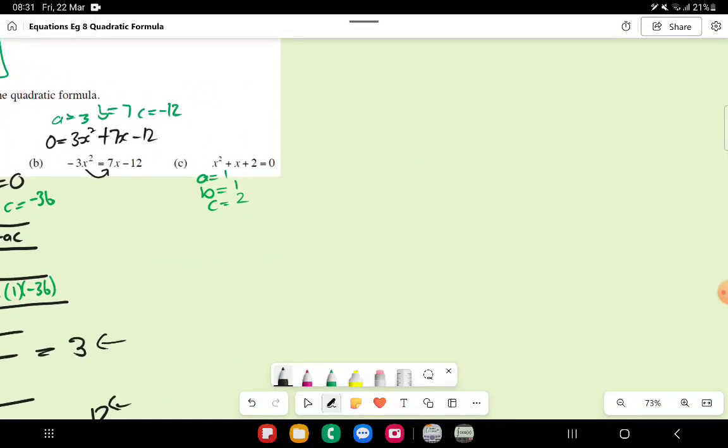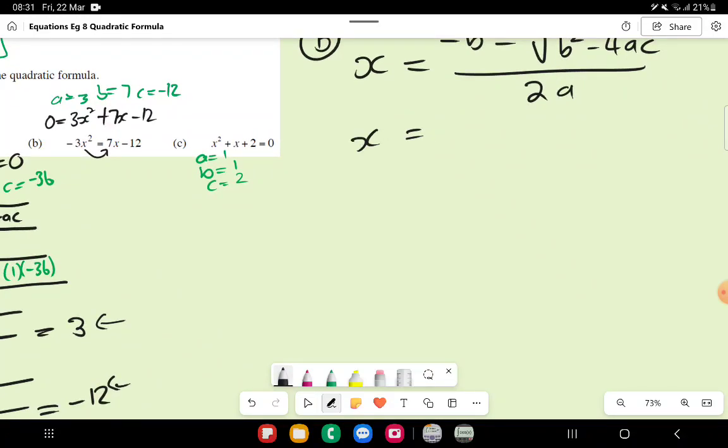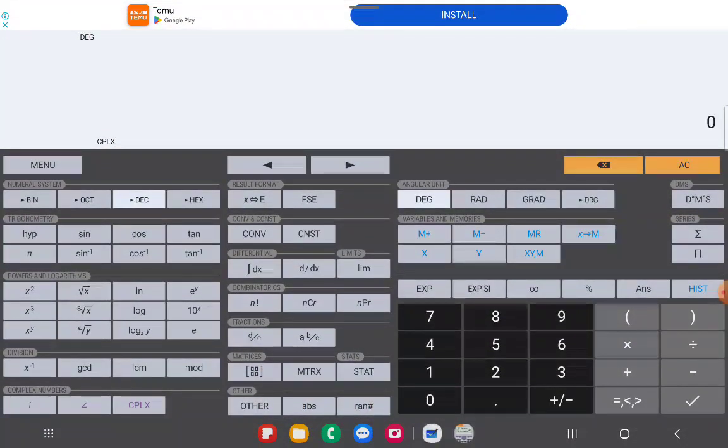Let's do b. So for question b, we know that x is equal to negative b plus minus the square root of b squared minus 4ac divided by 2 times a. And now we are going to substitute our values. So x is equal to negative b is 7. Remember we're looking at this one over there. So x is equal to negative 7 plus minus the square root of 7 squared minus 4 times a, which is 3, times c, which is negative 12. And all of that divided by 2a.